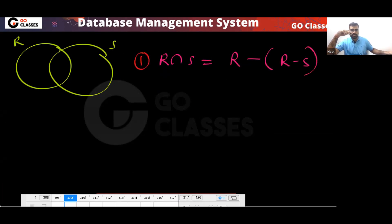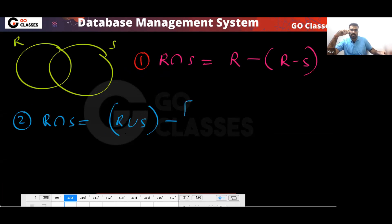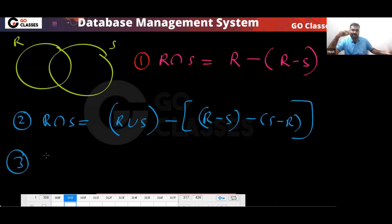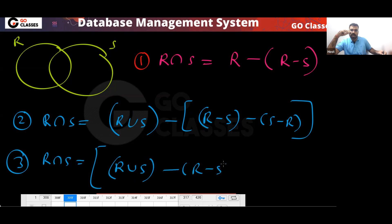Now, a second option: can we say R intersection S equals R union S minus (R minus S) minus (S minus R)? Which of these is correct — the first or the second?